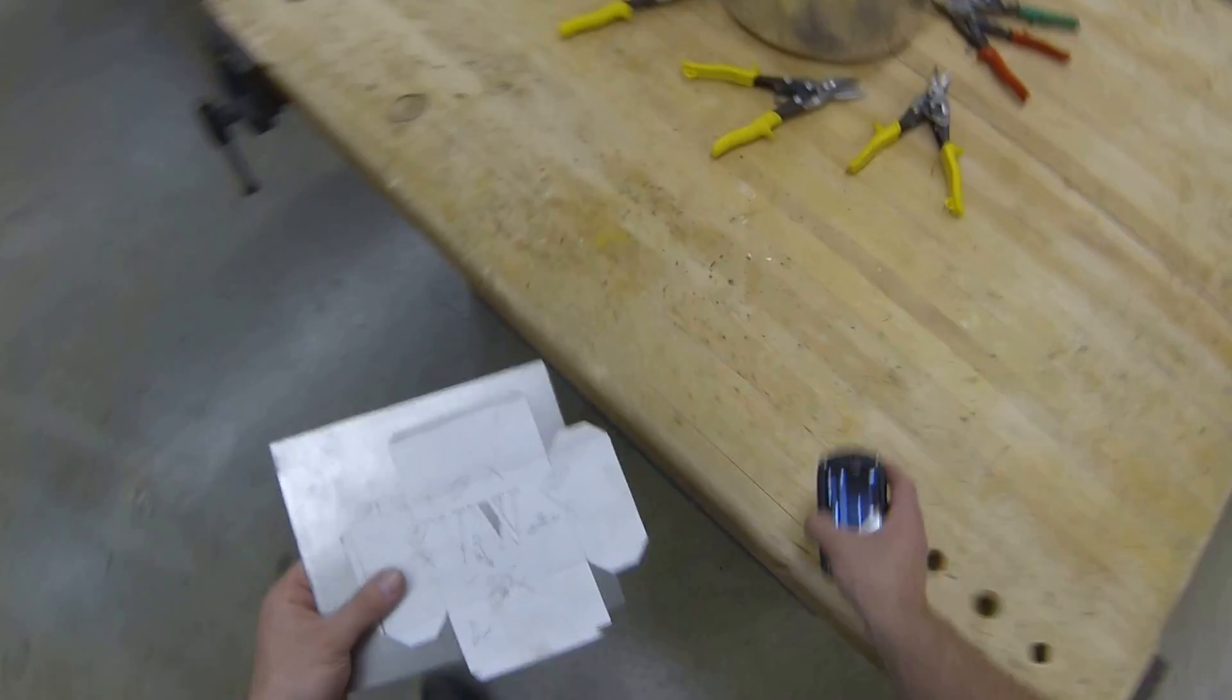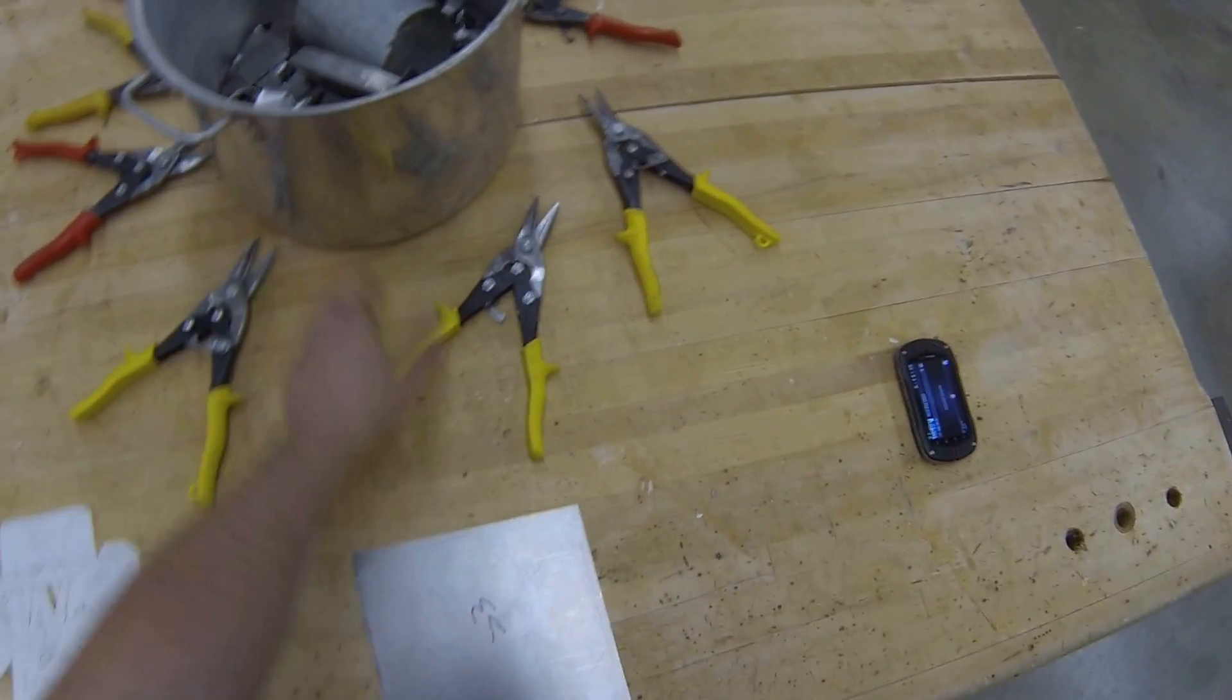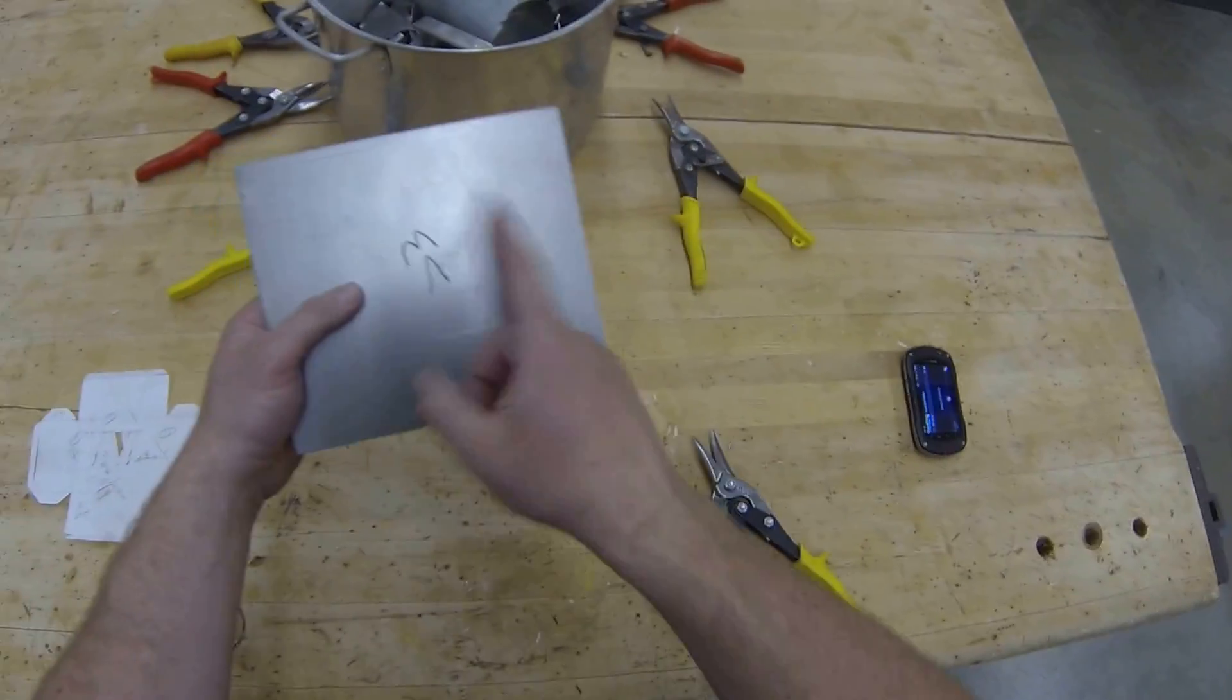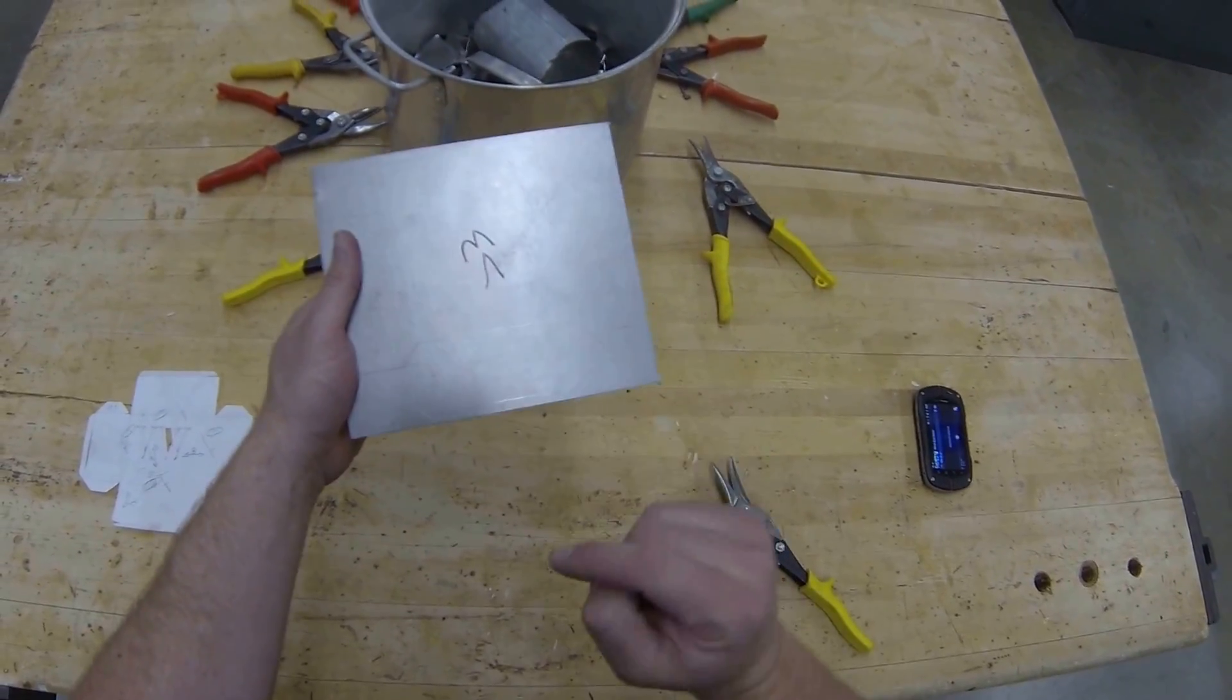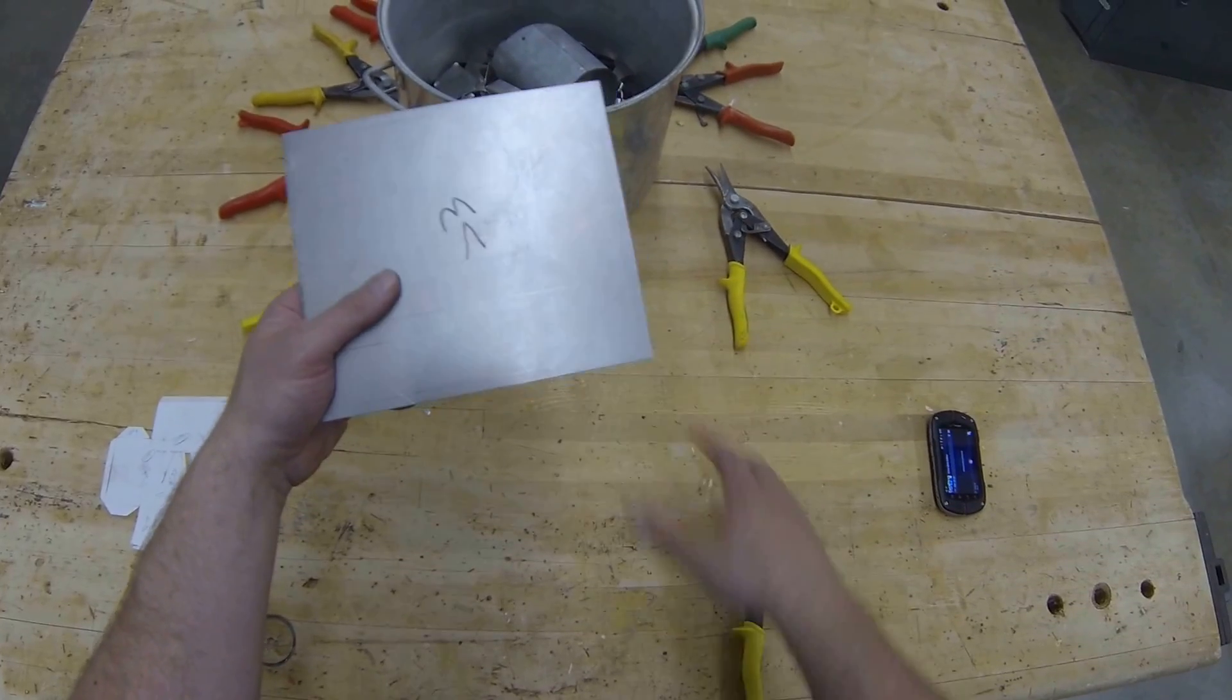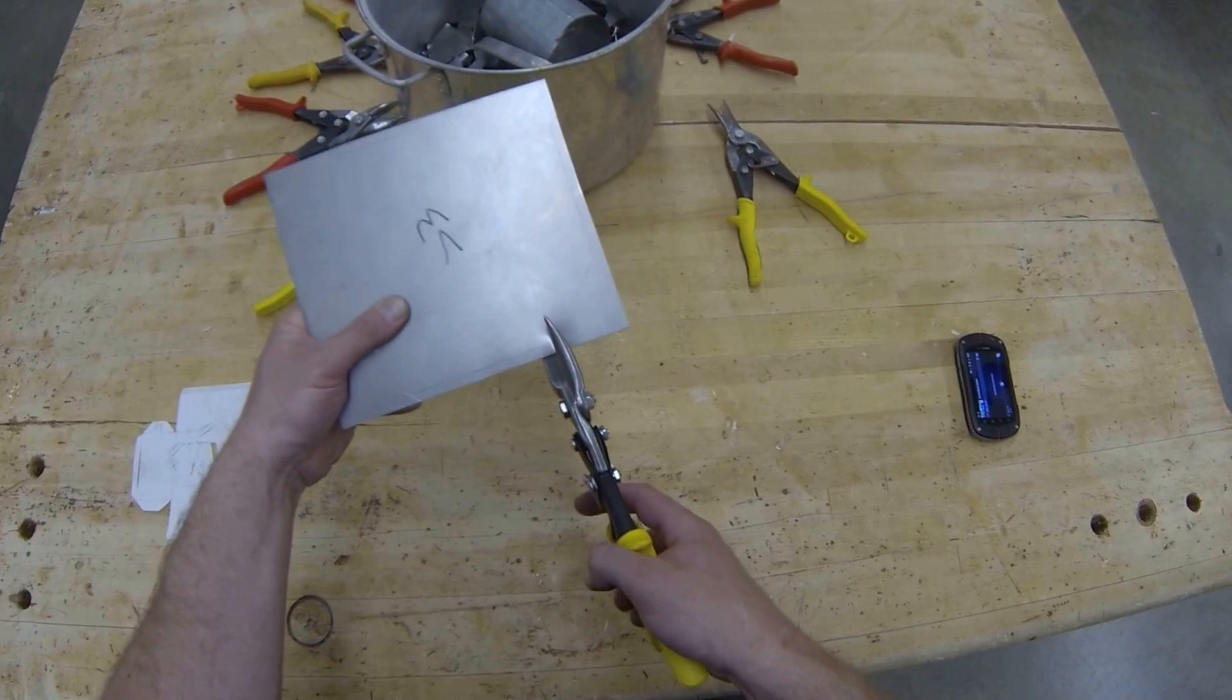We're going to set our template off to the side, get out our aviation snips, and cut out our sheet metal plan. It doesn't matter where you start, just make sure you cut next to your line. Try not to cut your tabs off. Make sure you're holding it up to the light so you can see all your lines. I'm going to start my cut here, make my straight easy cuts first.